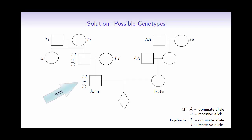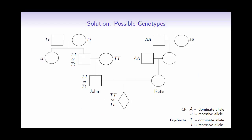Because John's mother is not a carrier, there are two options for John's genotype as well. Similarly, Kate is not a carrier of Tay-Sachs, so the child also has two different options. Looking at the possibilities for Kate's mother, she must have received a dominant capital A from her father and a recessive lowercase a from her mother, meaning she is heterozygous. This gives two possibilities for Kate, since her father is not a carrier of cystic fibrosis, and similarly two choices for the child.